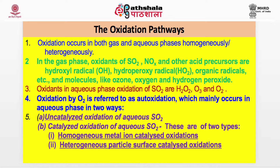Oxidation by O2 is referred to as auto-oxidation, occurring in aqueous phase in two ways: uncatalyzed oxidation by O2, and catalyzed by homogeneous metal ions or particle surface. The metal ions are always present in rainwater. Even in distilled water used for injections, you will find iron at around 10⁻⁷ mol/L, manganese at 10⁻⁸ mol/L, and copper at around 10⁻⁶ mol/L. These small trace metal concentrations are sufficient to cause catalysis and play an important role in these reactions.